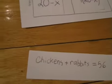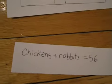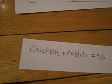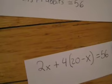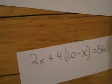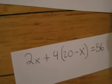Now the number of chickens plus chicken feet will equal 56, as we already know. We replace, so chickens becomes 2X, and rabbits become 4 times 20 minus X.